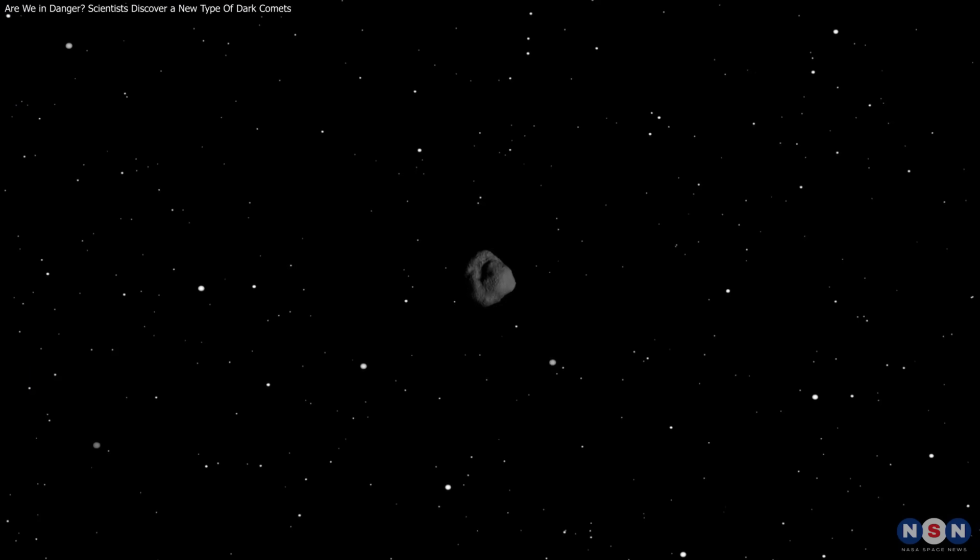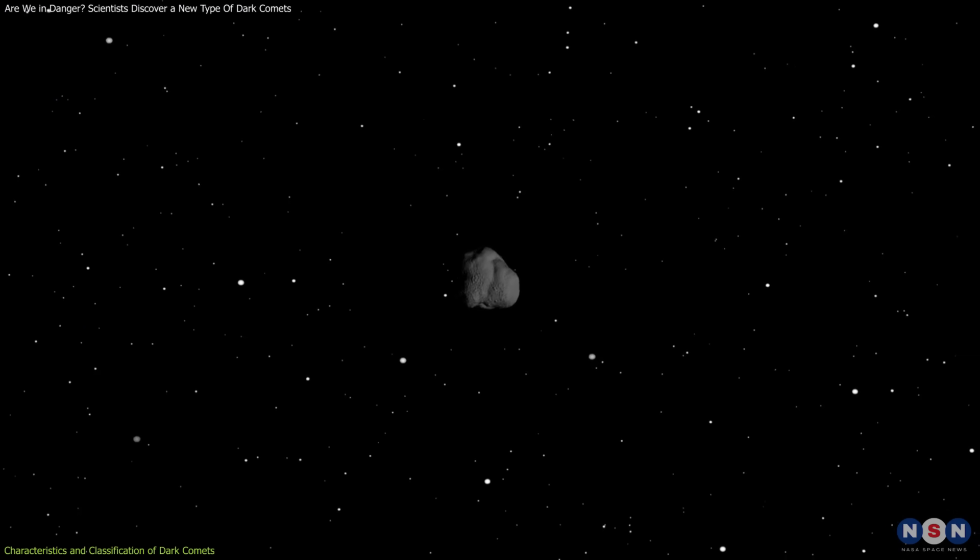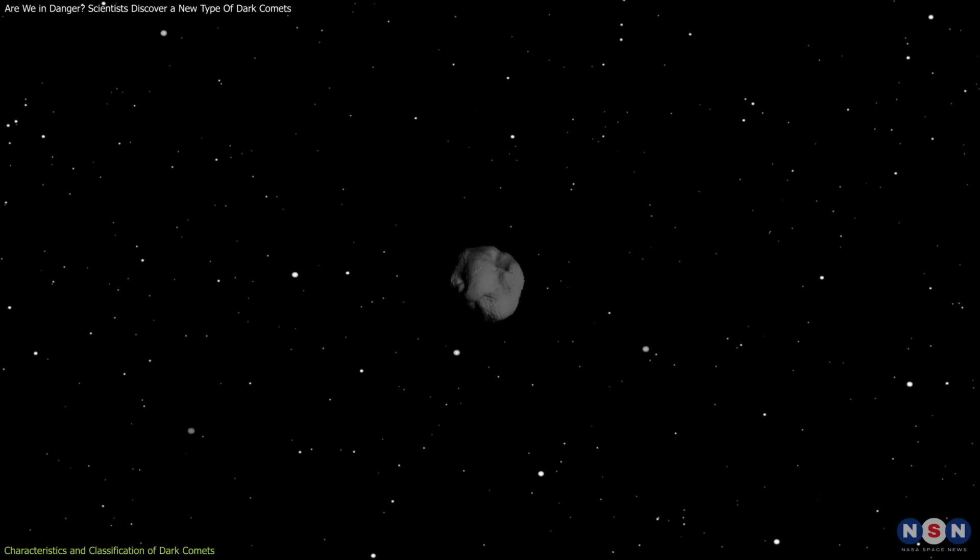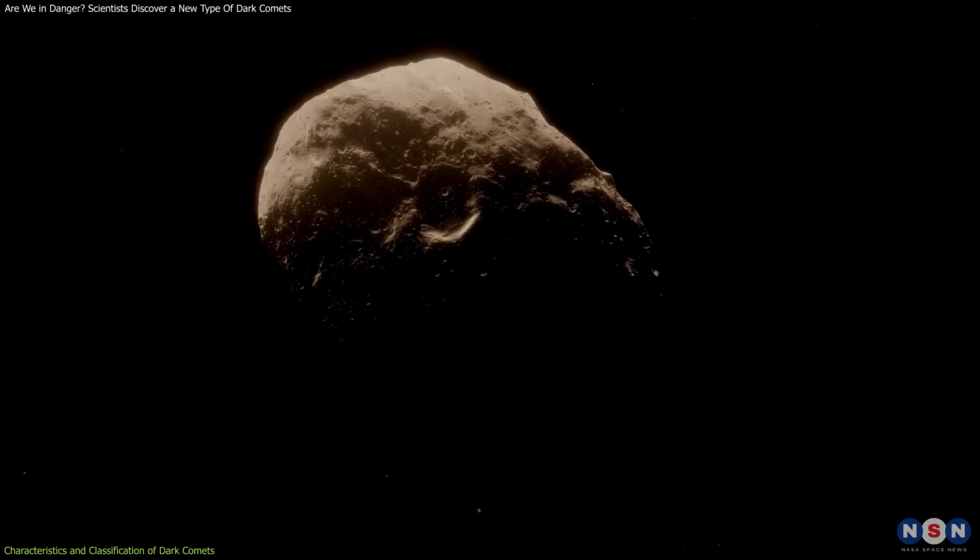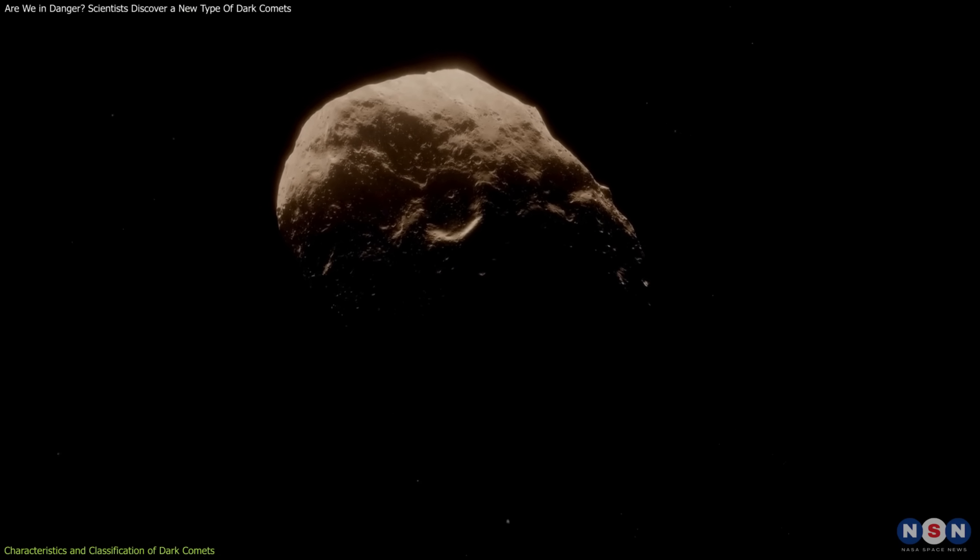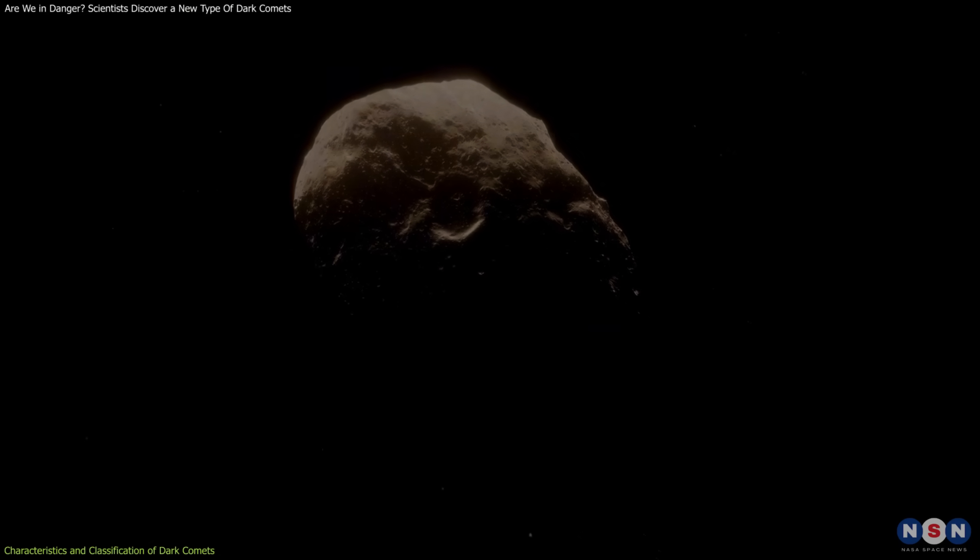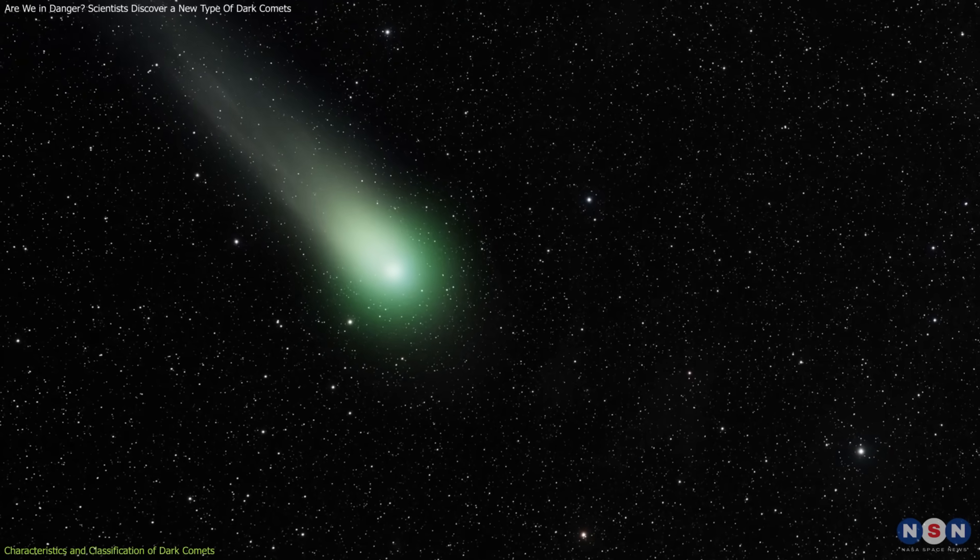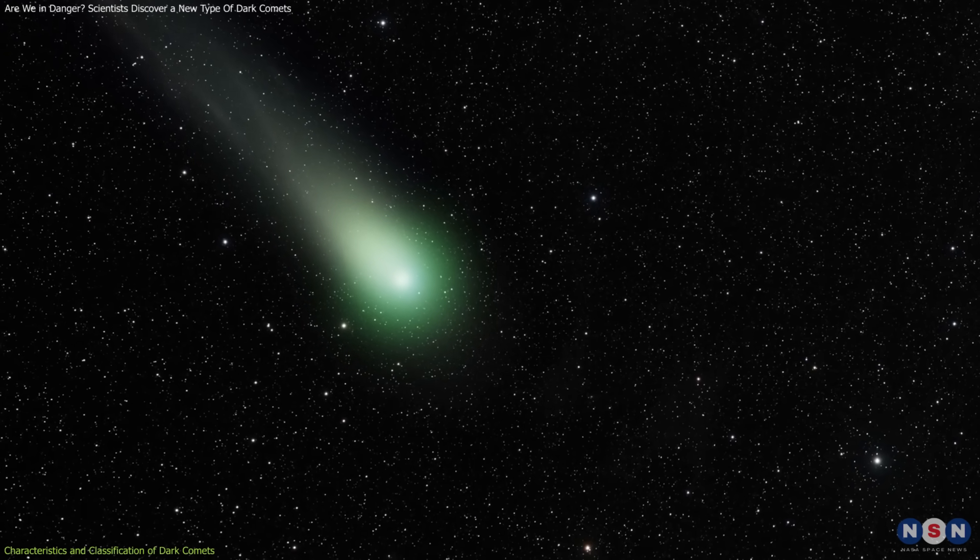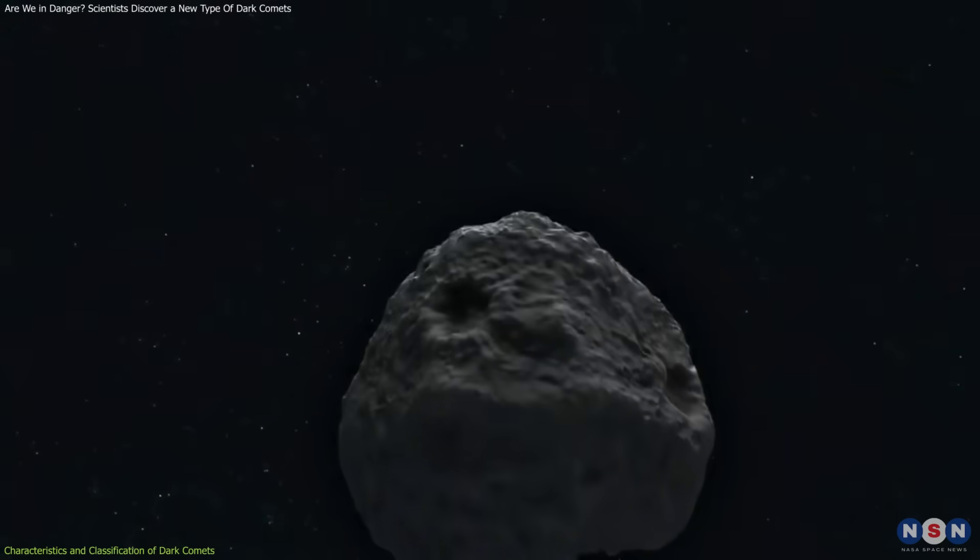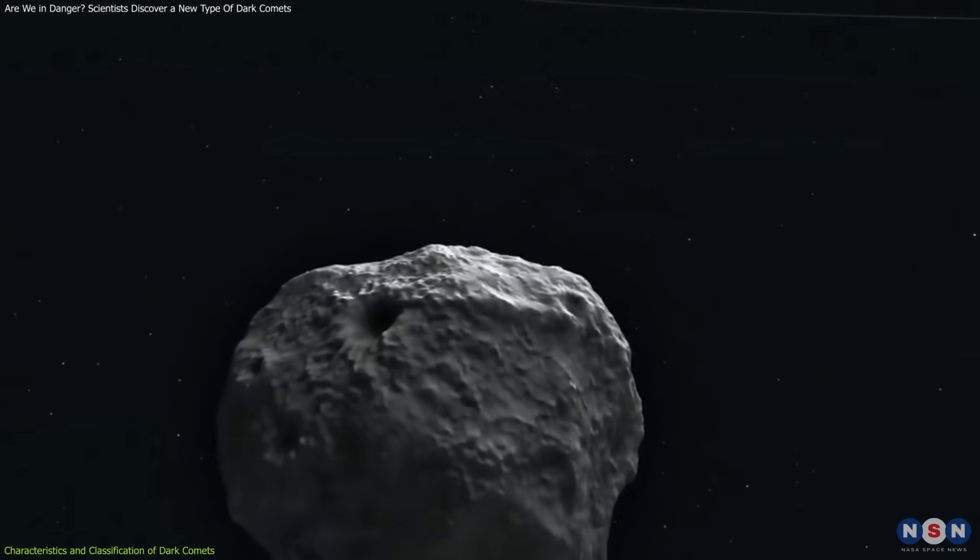Dark comets are not your typical celestial bodies. They're a hybrid of sorts, with the appearance of asteroids and the behavior of comets. First identified just a few years ago, these objects show non-gravitational acceleration, a hallmark of comets, but lack the visible tails or outgassing we associate with these icy travelers. This unique trait has placed them in a category of their own.